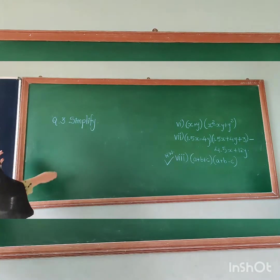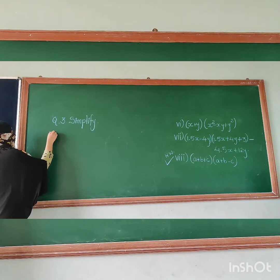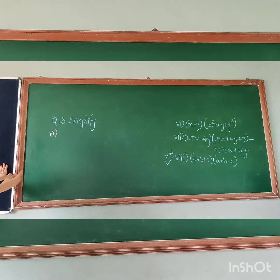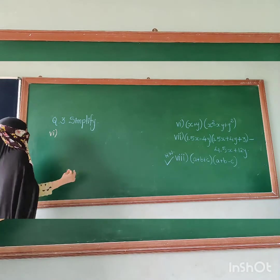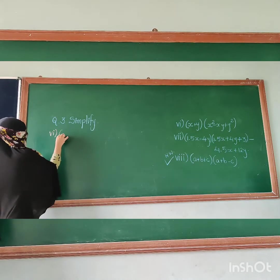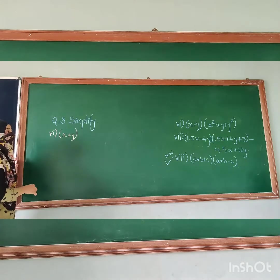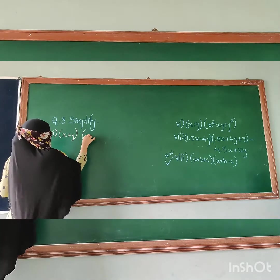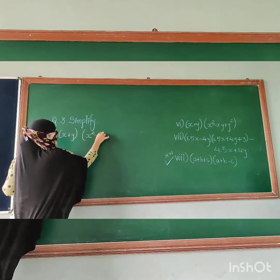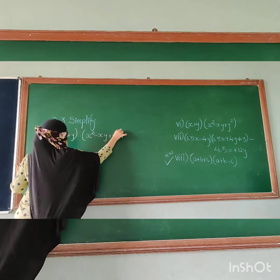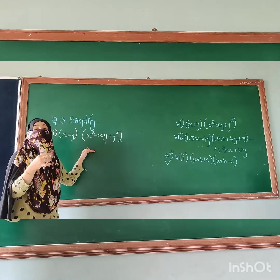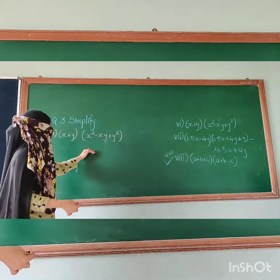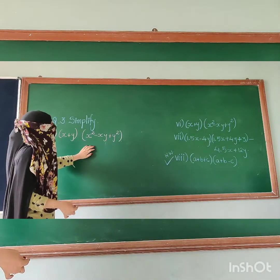Let's begin with the sixth question. I told you that in these three questions, we will see how to multiply a trinomial with a trinomial. So let's begin with that. Here is the first question. It will be same as the multiplication of binomial with binomial — now the binomial will be trinomial.